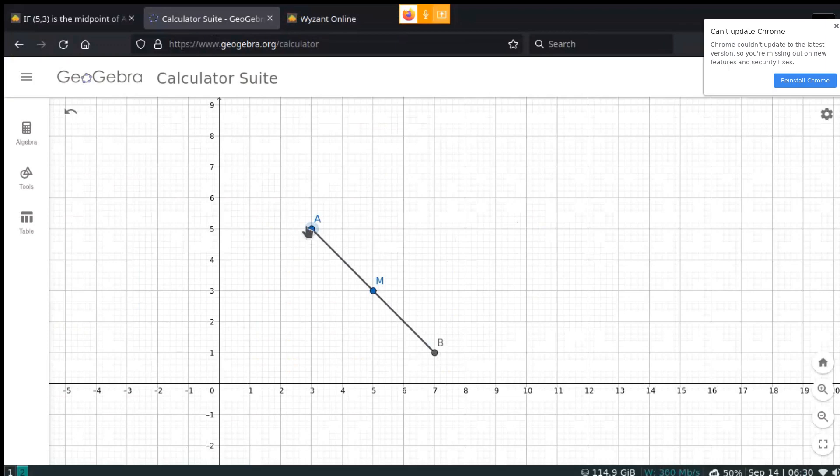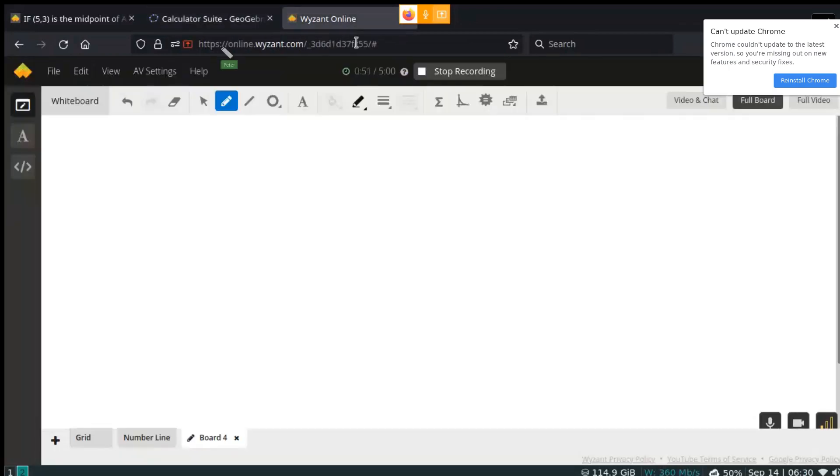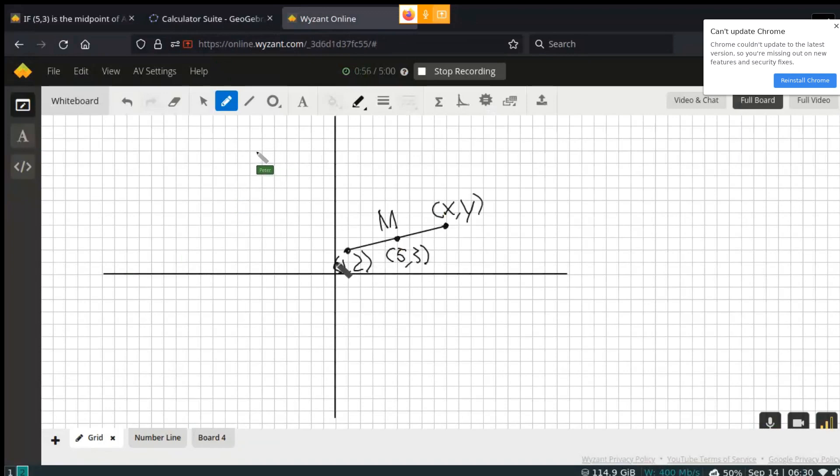Because we're not actually told what A is equal to in the question, it's impossible to figure out what B is equal to. But what happens if we are given what B is equal to, or A is equal to? In this case, A being (1,2).